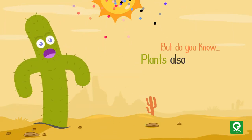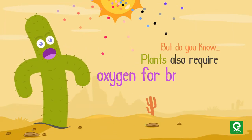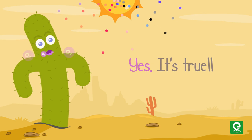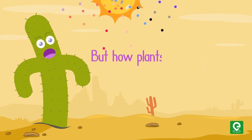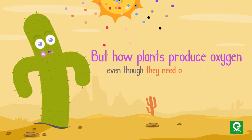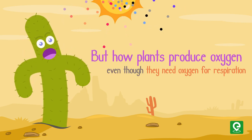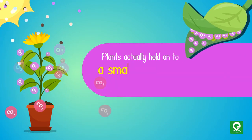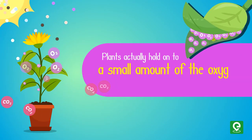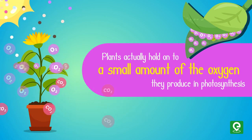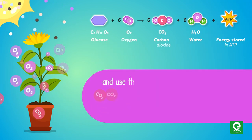Yes, it's true. But how? Plants produce oxygen, even though they need oxygen for respiration. Plants actually hold on to a small amount of the oxygen they produce in photosynthesis and use that oxygen to break down carbohydrates to generate energy.